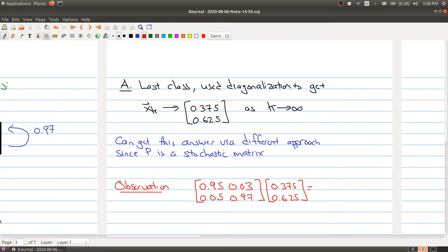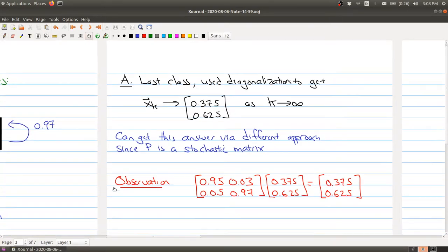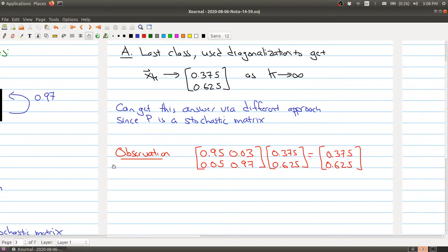Here is the matrix again that's capturing how people are moving between Earth and Mars. If we multiply it by this vector that it approaches, you'll find you get the same vector back—you'll get 0.375 and 0.625. This actually makes sense because this is an equilibrium for the immigration. Once you reach this proportion between the two planets, any given year you're just going to keep this proportion year after year.